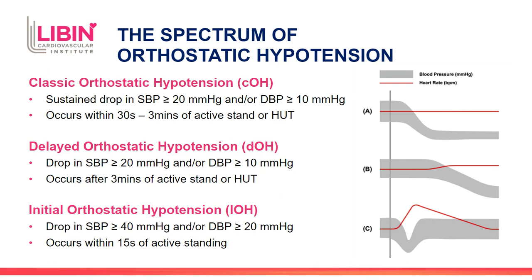Then there's initial orthostatic hypotension. Instead of being delayed, this occurs earlier — a bigger, deeper drop in blood pressure. The threshold classically described is a drop of 40 millimeters of mercury in systolic pressure or 20 millimeters in diastolic pressure. This occurs within 15 seconds of standing and often recovers within a minute. Unlike the other forms that don't recover, this one does. It can be associated with a fairly prodigious tachycardia, and importantly, it often occurs in young, otherwise healthy people — a very different group from classical and delayed orthostatic hypotension.